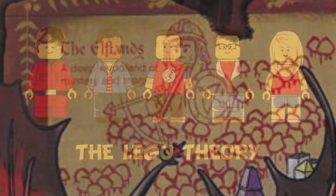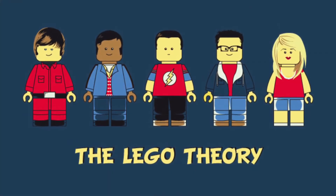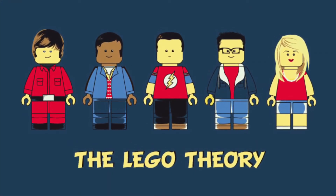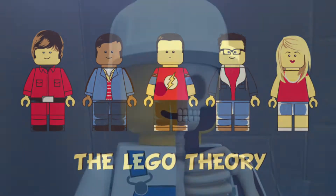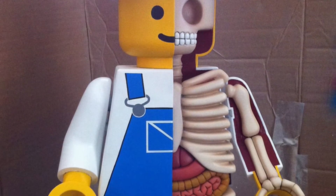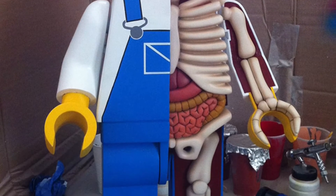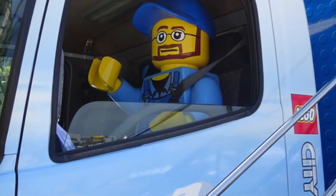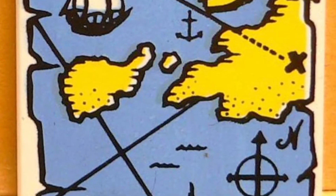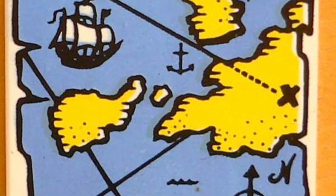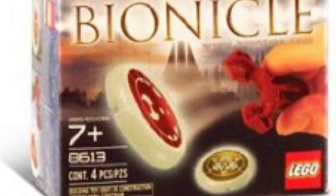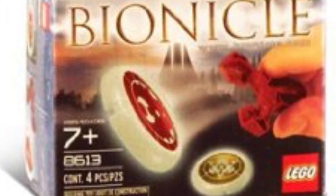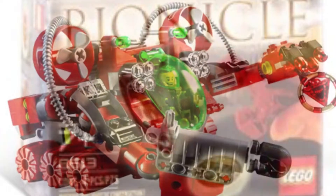Not only can we create fan-based theories about LEGO themes, but we can also compare LEGO to real life. What would be the best way to make LEGO buildings and models in scale with real life and with LEGO figures? If LEGO existed in the real world as a civilization, where would it be located? Or how about, how dangerous would a LEGO projectile in real life scale be?